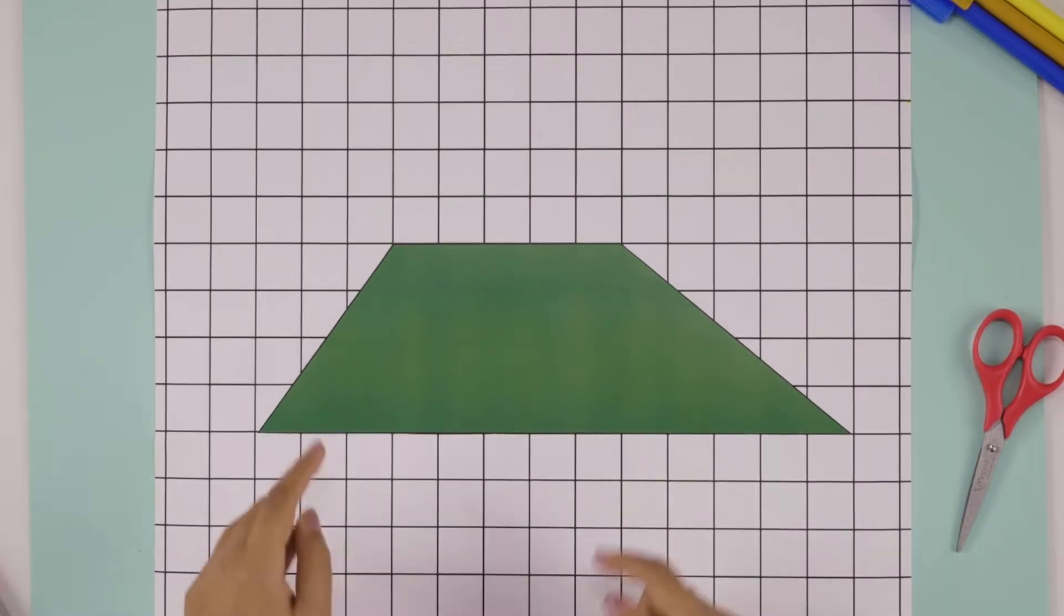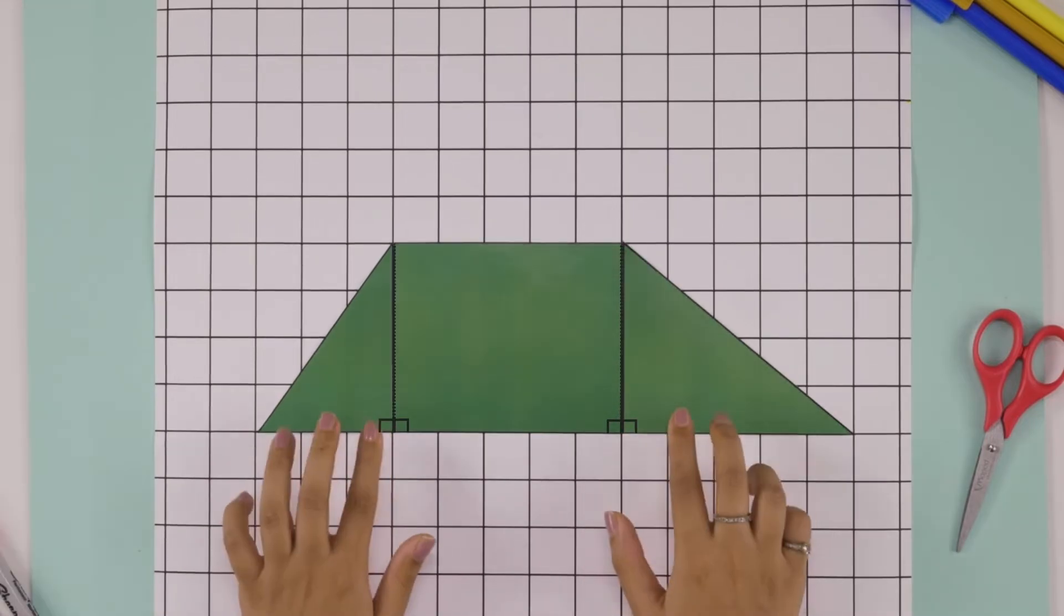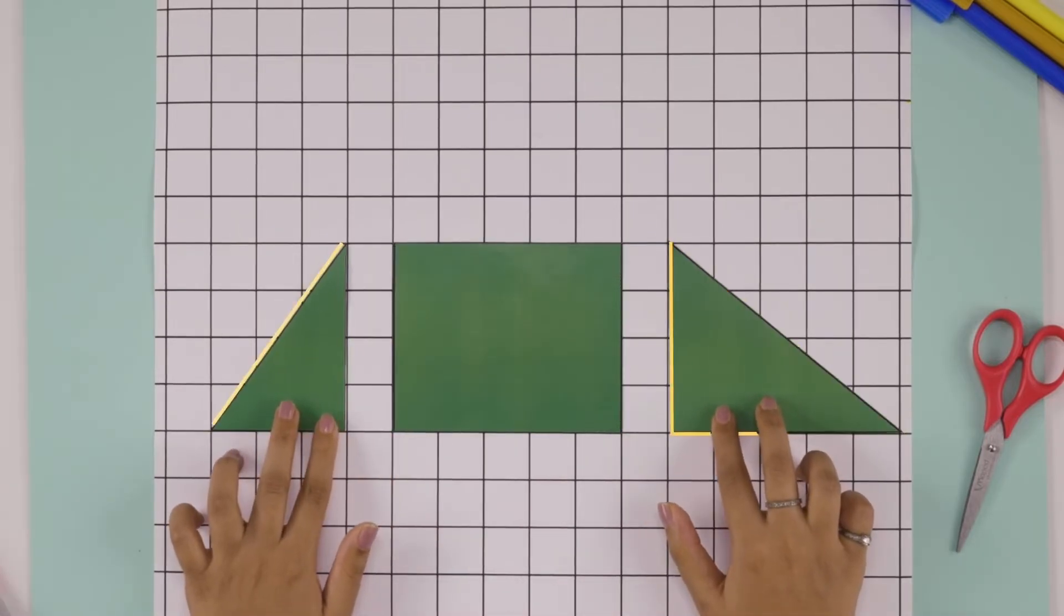To find its area, let's divide it into three shapes. We get two triangles and a rectangle.